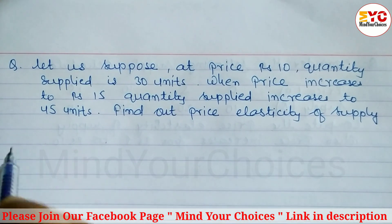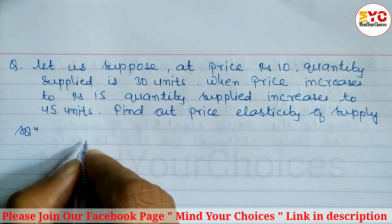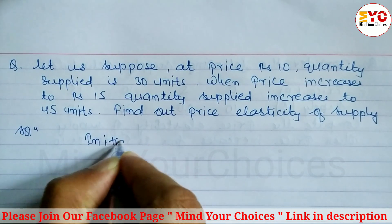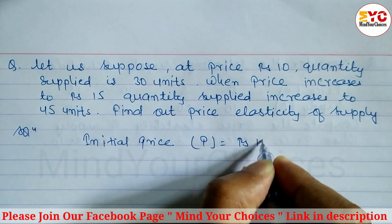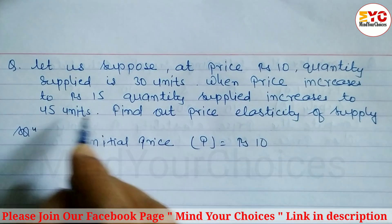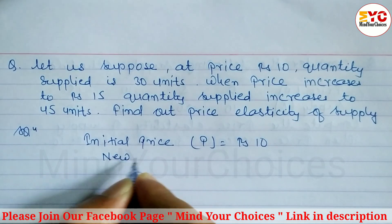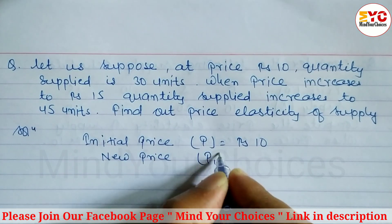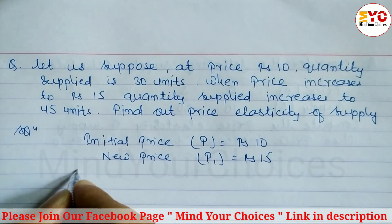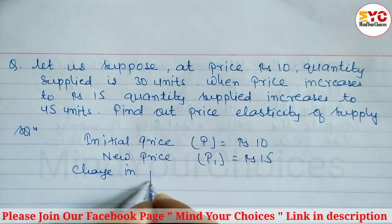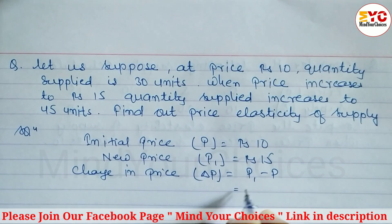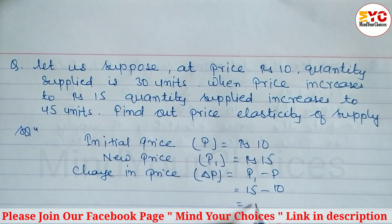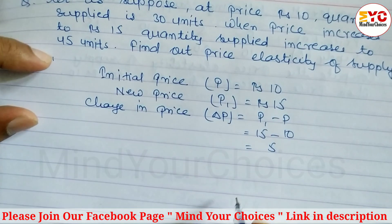Let's start. The initial price p is equal to rupees 10. The price increases to become rupees 15, so the new price p1 is equal to rupees 15. The change in price ΔP is equal to p1 minus p, which is 15 minus 10, giving us rupees 5. So change in price is equal to rupees 5.